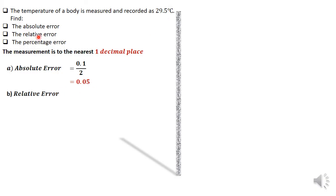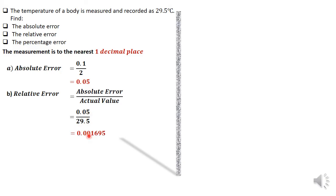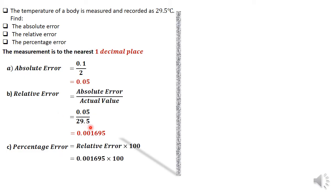The relative error is the absolute error divided by the actual value, which is 0.05 divided by 29.5, giving 0.001695. The percentage error is relative error times 100, which is 0.001695 times 100, giving 0.1695%. So the percentage error introduced by giving the temperature of that body as 29.5 is 0.1695%.